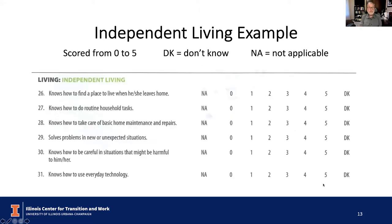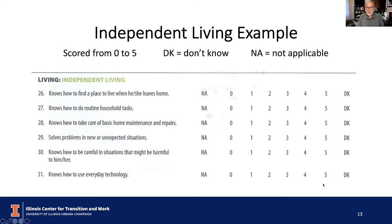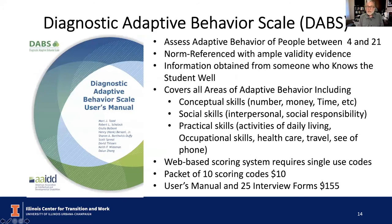Here's how you score it — take the independent living example: 'Knows how to find a place to live when he or she leaves home' — you score one through five, or don't know/not applicable. 'Knows how to do routine household tasks' — one through five. These are broad items across a wide variety of domains. There's an educator version, a student version, and a parent version. The only one that I believe has ample supporting validity evidence is the educator version. That's the TPI-3.